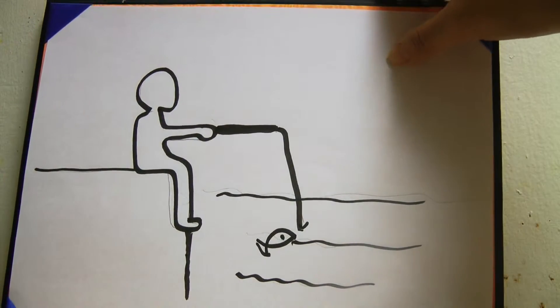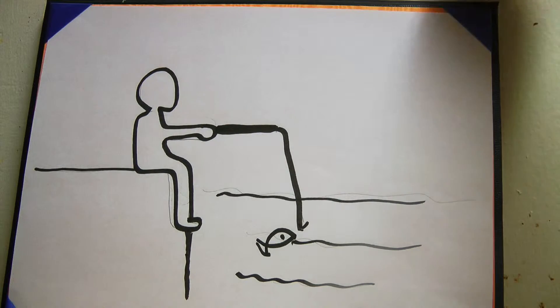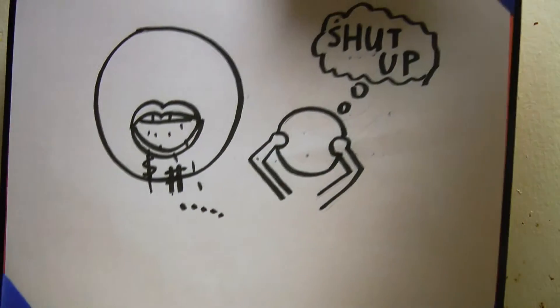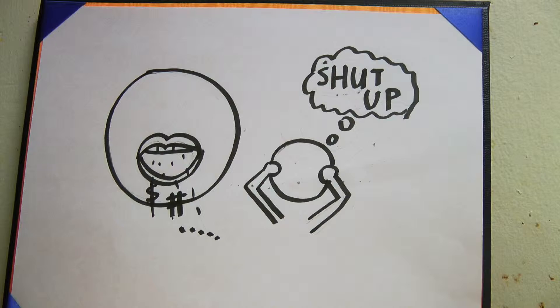Sign number two, introverts prefer to have solo hobbies, like fishing, so they don't have to be in a big group of people. Sign number three, introverts feel really uncomfortable being around loud people, people who is always talking.